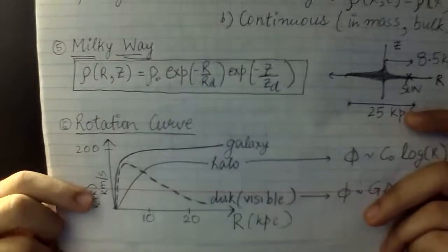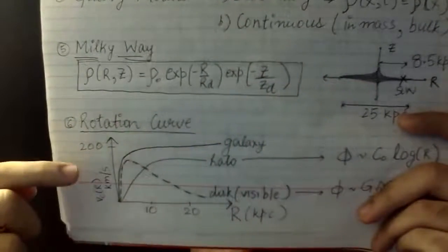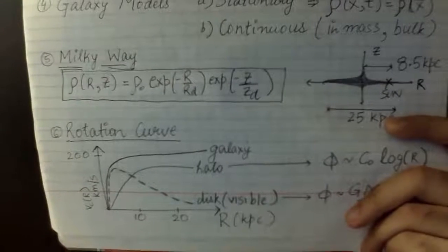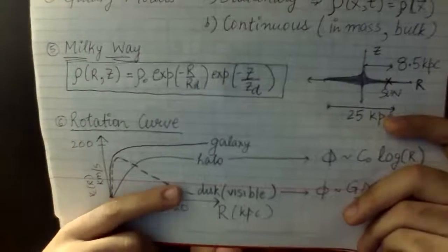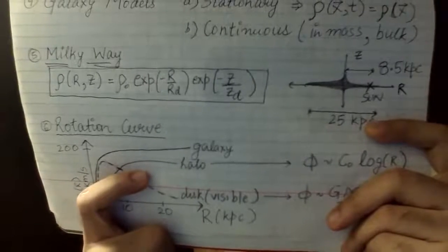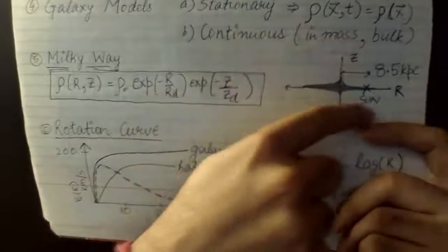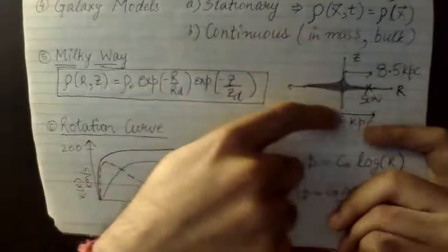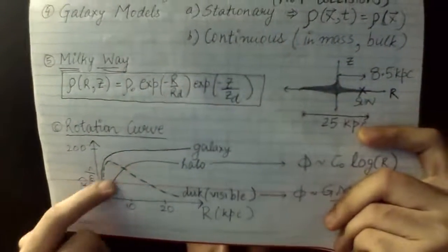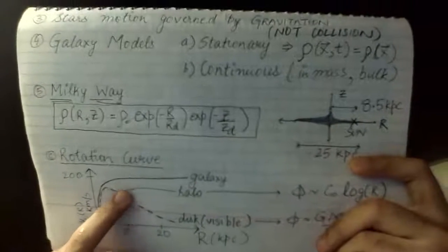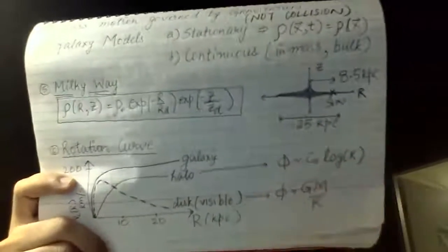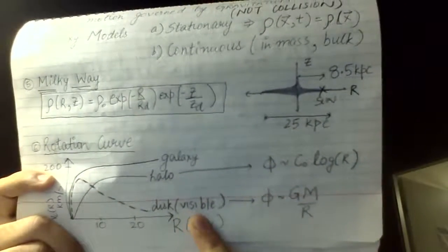We'll also talk about the rotation curve — rotational velocities of stars in the disk on the y-axis versus radius from the center on the x-axis. Our galaxy consists of visible stars, gas, and dark matter residing in the halo (the region beyond the disk). Each component has its own independent rotation curve: one for the disk and one for the halo, and the total rotation curve is their combination.